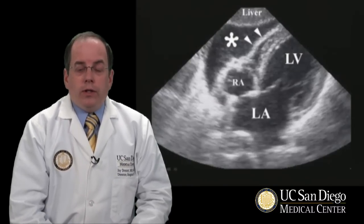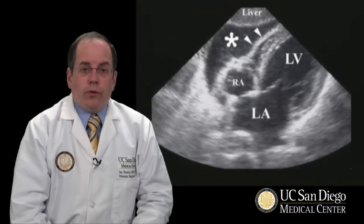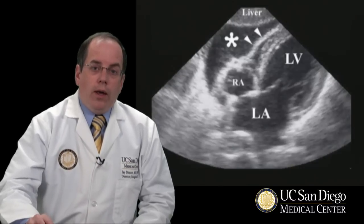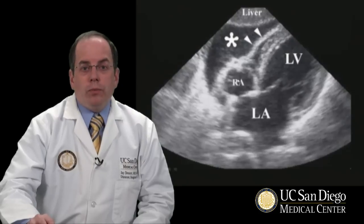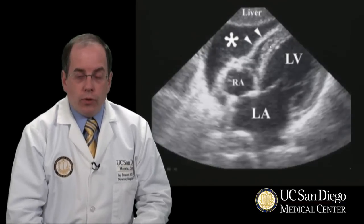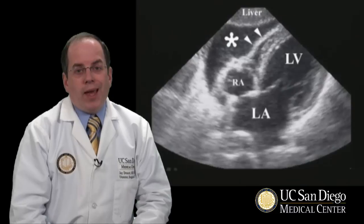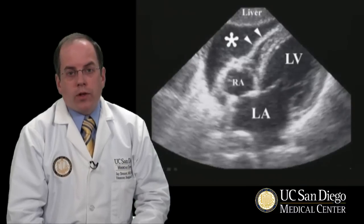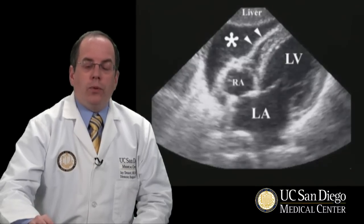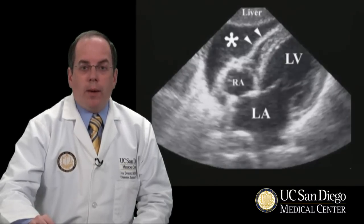Also examined at the same time is the subxiphoid window looking up towards the heart. In this case, we can see the heart shows up very well. The left ventricle and left atrium are here. This is the right atrium. But in addition, between the liver and the pericardium, there should be no black fluid. However, in this example, the asterisk marks the presence of fluid between the liver and the heart, which is pathognomonic of a patient with pericardial effusion or tamponade.